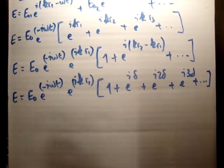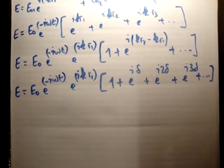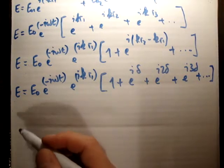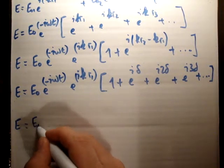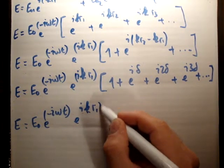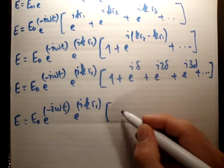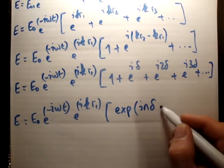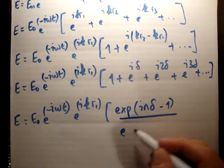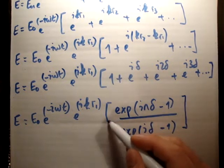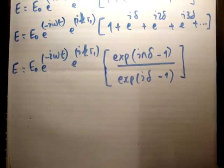For those doing a good bit of mathematics, you may realize this can be summed using a binomial expansion. I'm not going to go through the actual doing of the binomial expansion. The end result is that the electric field equals e0 times e to the negative iωt times e to the ikr1 times the quantity (e to the inδ minus 1) divided by (e to the iδ minus 1). That's just the binomial approximation.